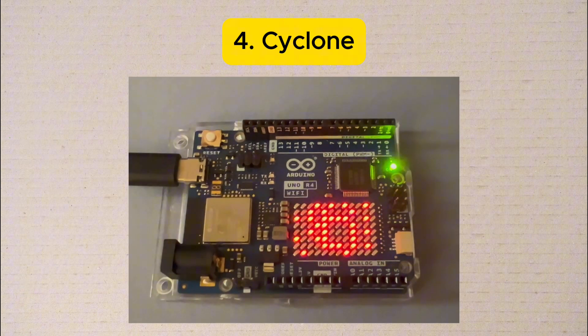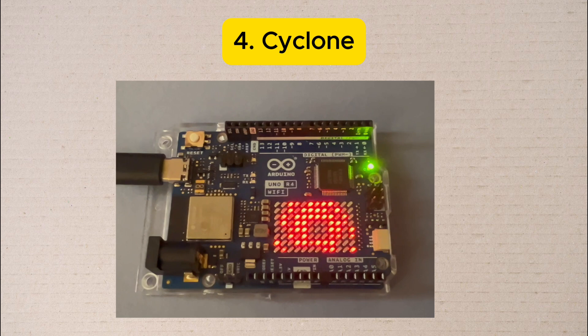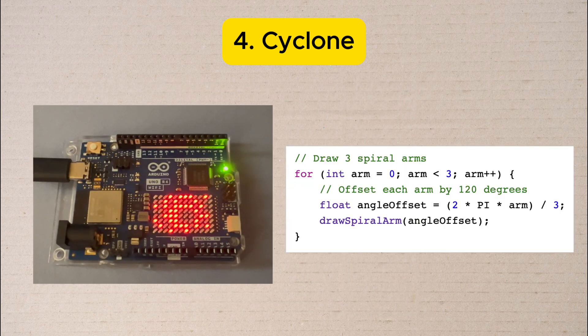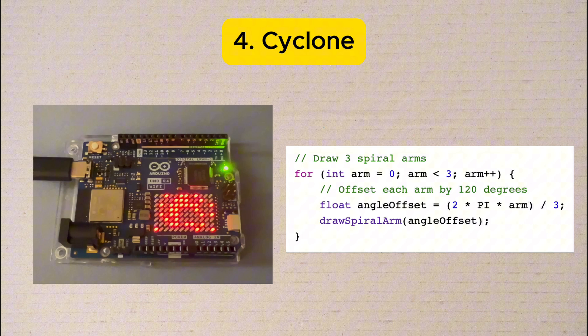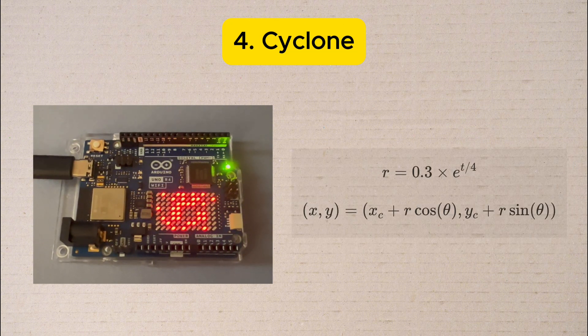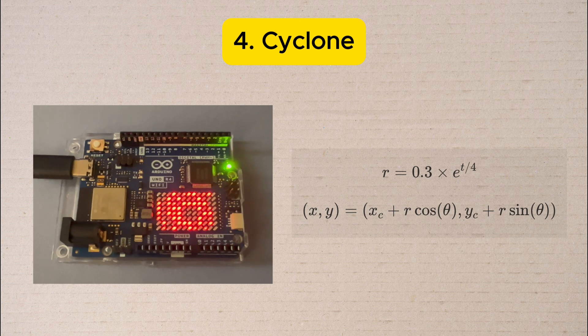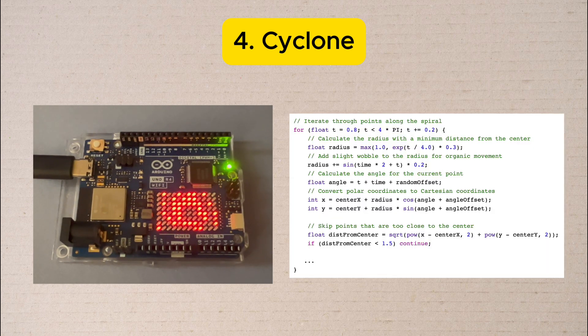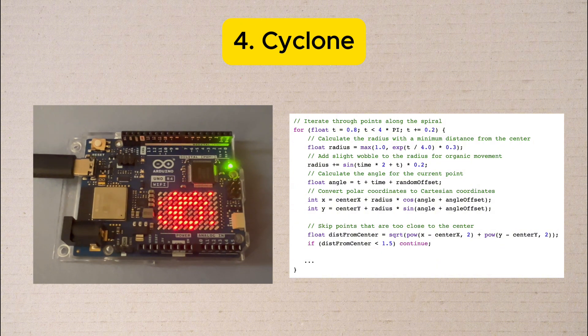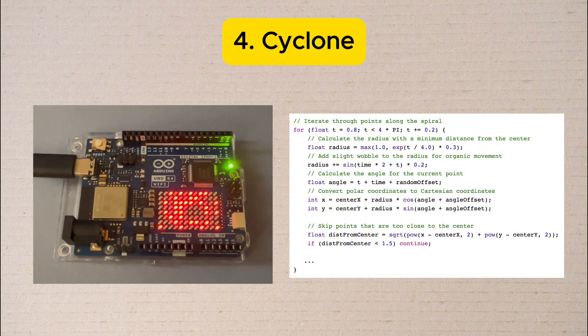Number four: Cyclone. To create a pattern similar to a cyclone we draw three arms of light each spaced 120 degrees apart. Each arm starts out from near the center and spirals outward using an exponential function. We avoid the center to create the eye effect. All the arms rotate together and we add tiny random wobbles to make it more realistic.